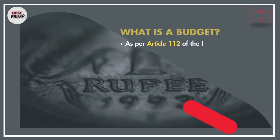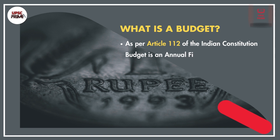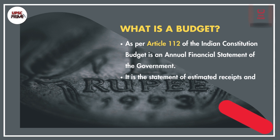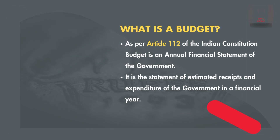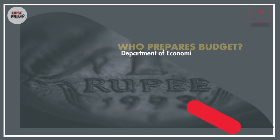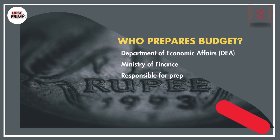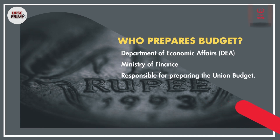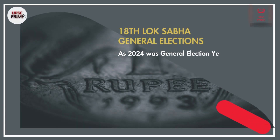What is a budget? As per Article 112 of the Constitution, the budget is an annual financial statement of the government — specifically, the statement of estimated receipts and expenditure of the government in a financial year. The Department of Economic Affairs and the Ministry of Finance are responsible for preparing the Union Budget.